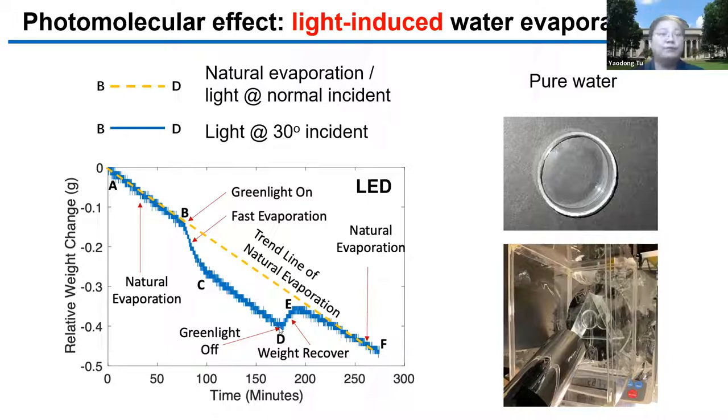Then we turn off the light at point D. Amazingly, the weight recovered from D to E, and then it follows the natural evaporation. This is a very exciting phenomenon and one typical feature of the photomolecular effect.